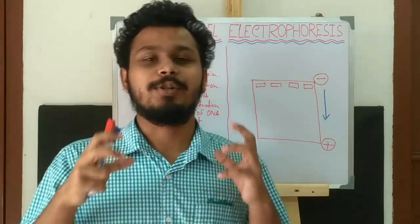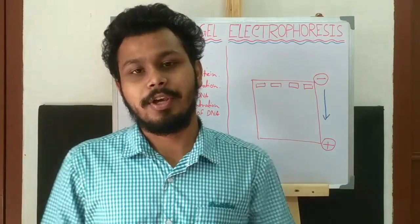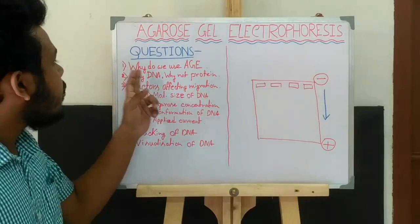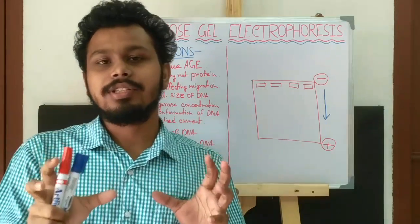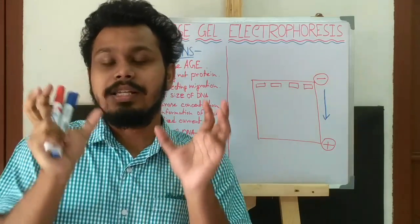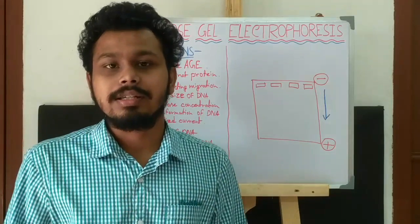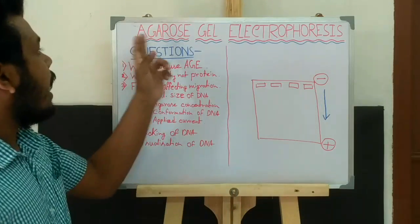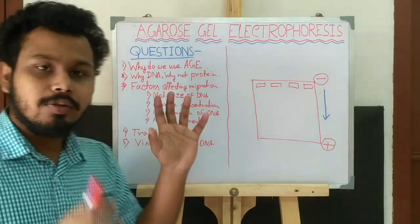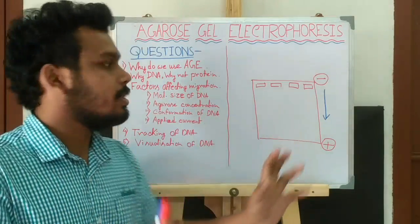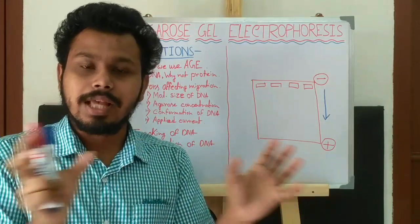Hello friends, today I am going to discuss about agarose gel electrophoresis. Agarose gel electrophoresis is used to separate DNA molecules according to their size, in which the agarose gel acts as a matrix on which the DNA molecules migrate, and electrophoresis is used to separate DNA molecules according to their size by applying electric current.